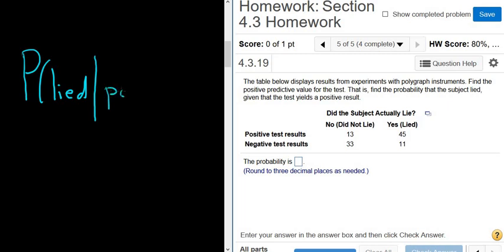So just read it in order. It's really important to go slowly and go in order. So probability is P. Subject lied. So that goes there. And whenever you see the given that, you write the line. And everything after the given that goes after the line. So positive.